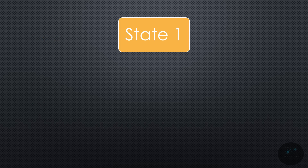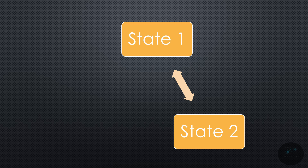So, a finite state machine is a model to define a finite number of states that transition amongst each other — going from state 1 to state 2, and back from state 2 to state 1.